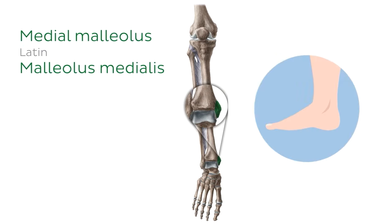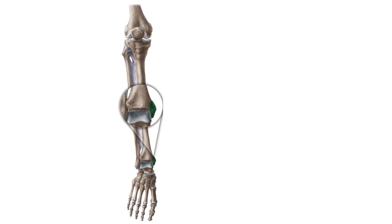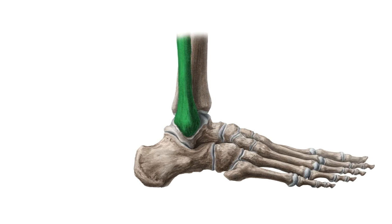You can actually palpate and see the medial malleolus on your own ankle — you could try that now if you'd like. Let's continue on with the tutorial. Now we'll move across to the other bone of the leg, the lateral bone, which is the fibula.